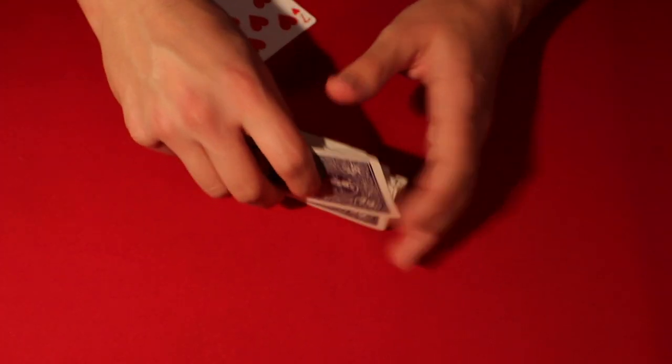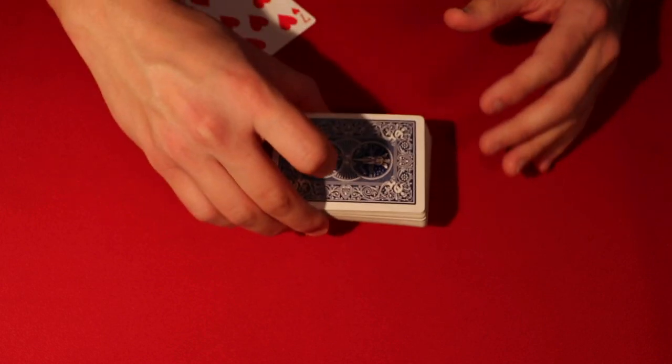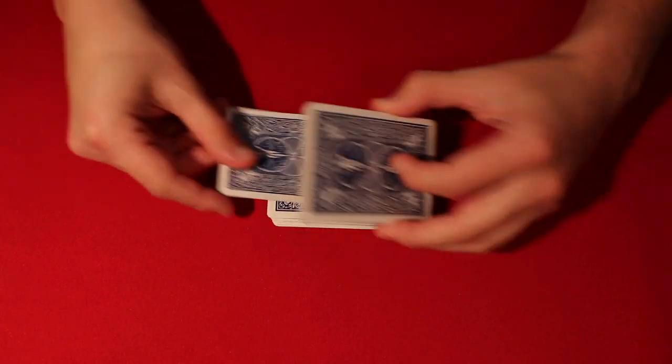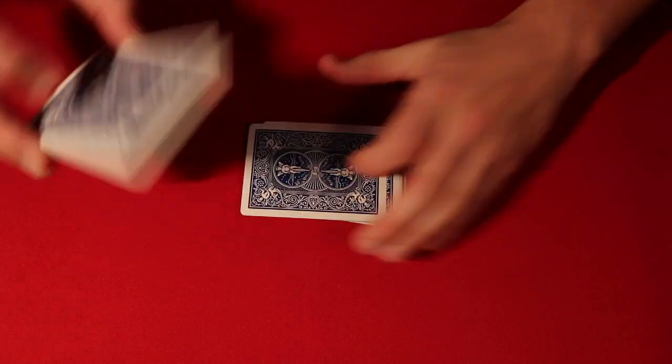All right, so they were thinking of the seven of hearts and all you're going to do is tell them that you're going to take their selection, this completely random selection, and you're going to lose it somewhere into the middle of the deck.